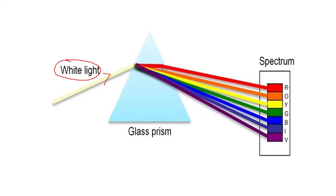The first color is red, then orange, yellow, green, blue, indigo, and violet. This is a spectrum like a rainbow — a spectrum of colors — which shows that white light is made up of seven colors. This concept is called dispersion of light.